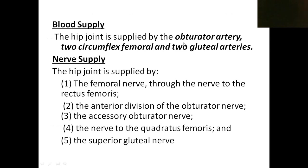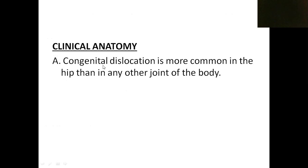Blood supply is provided by the obturator artery, two circumflex femoral arteries, and gluteal arteries. Nerve supply is by the femoral nerve, obturator nerve, accessory obturator nerve, nerve to quadratus femoris, and the superior gluteal nerve. These are the major features of the hip joint; remaining details should be read from the textbook.